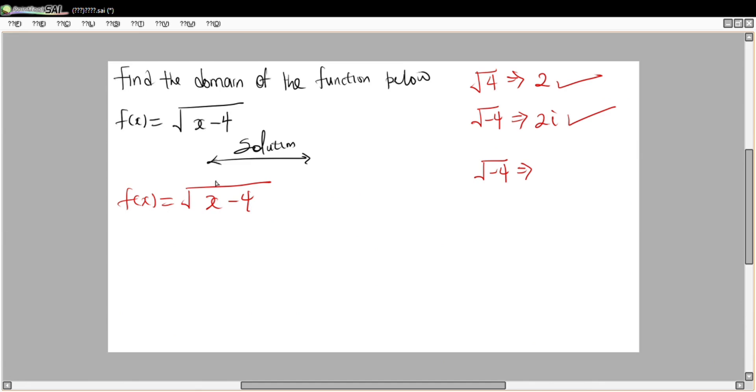Now from here we can solve it. So far we know that x minus 4 must be greater than or equal to zero. To find the domain, that means x must be greater than 4.